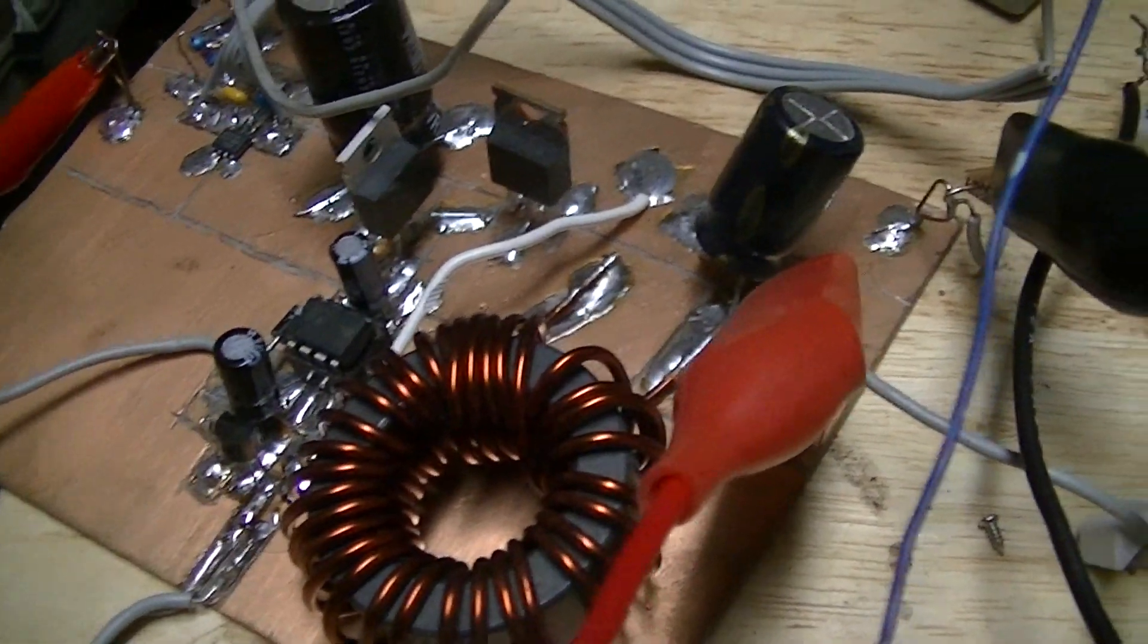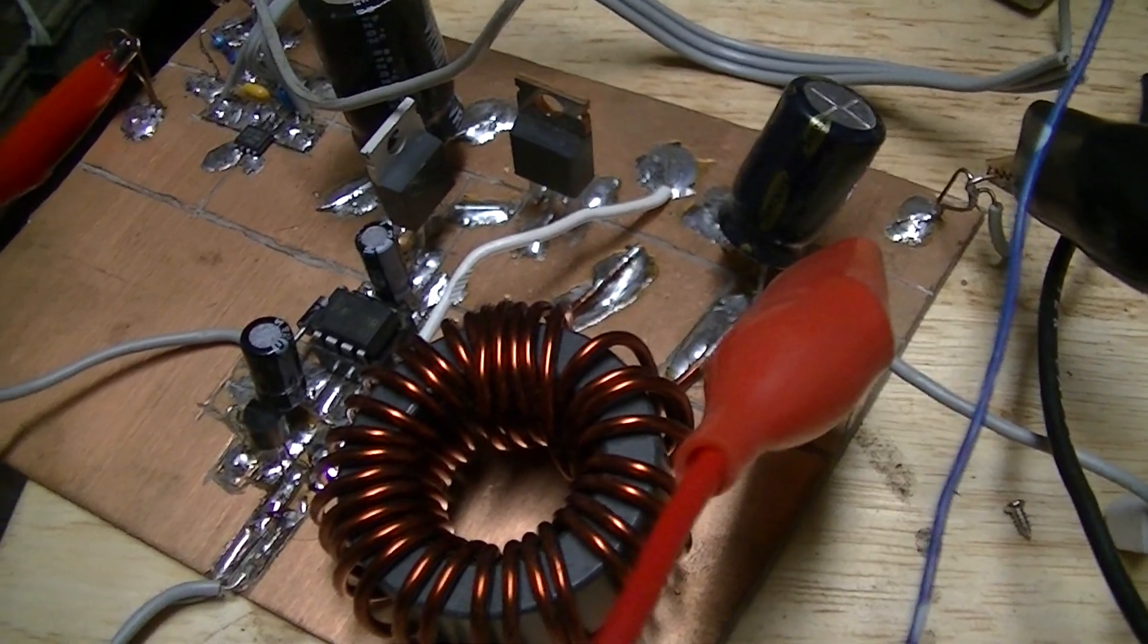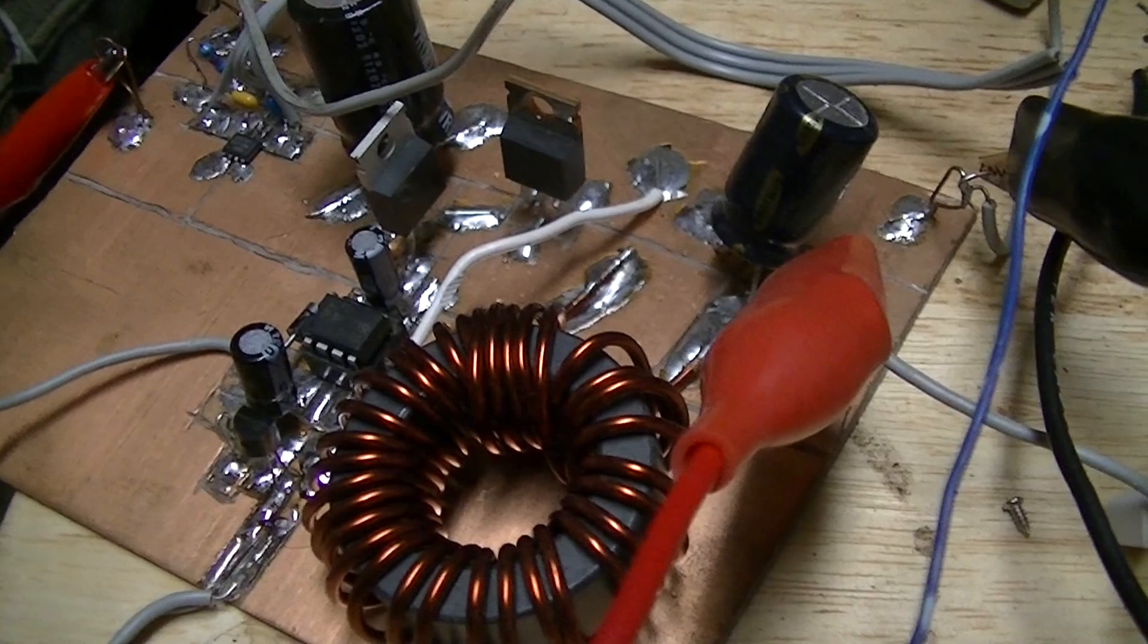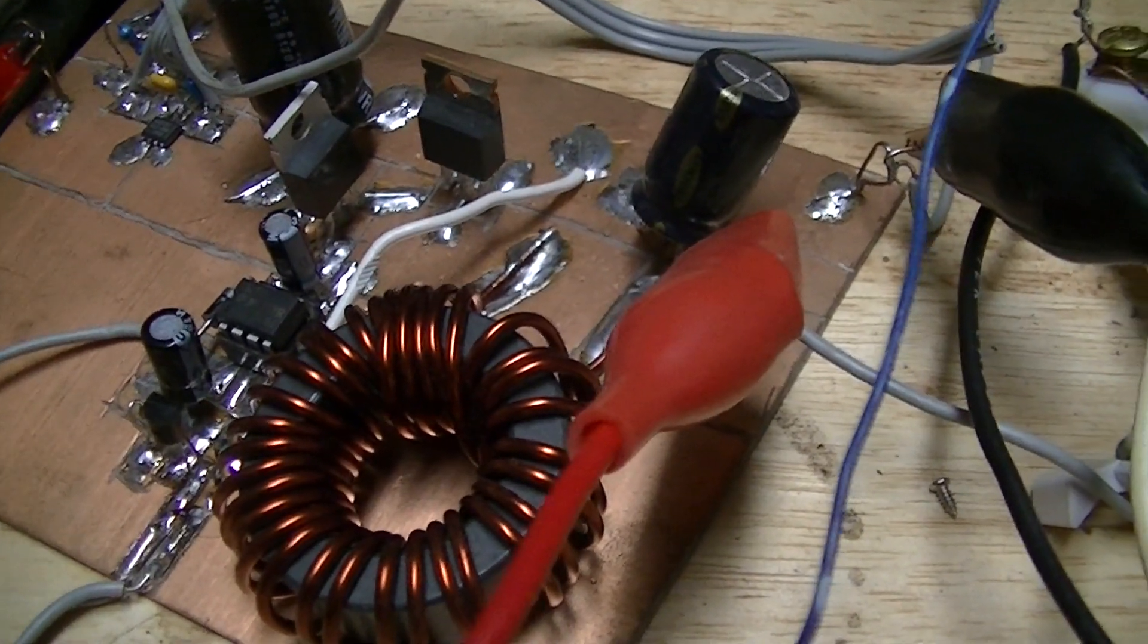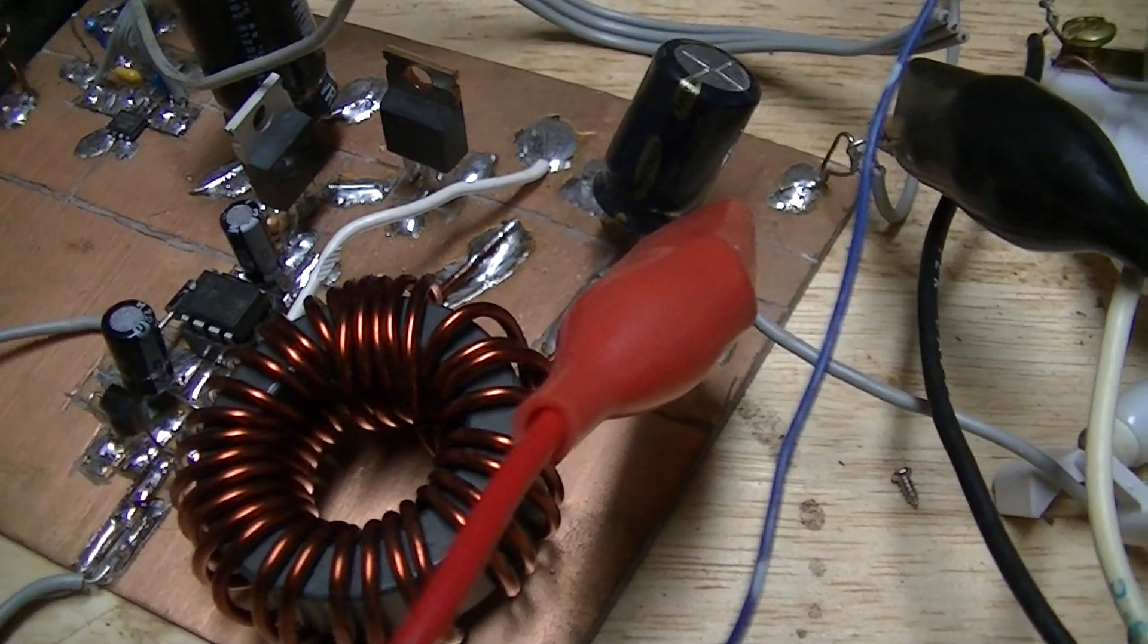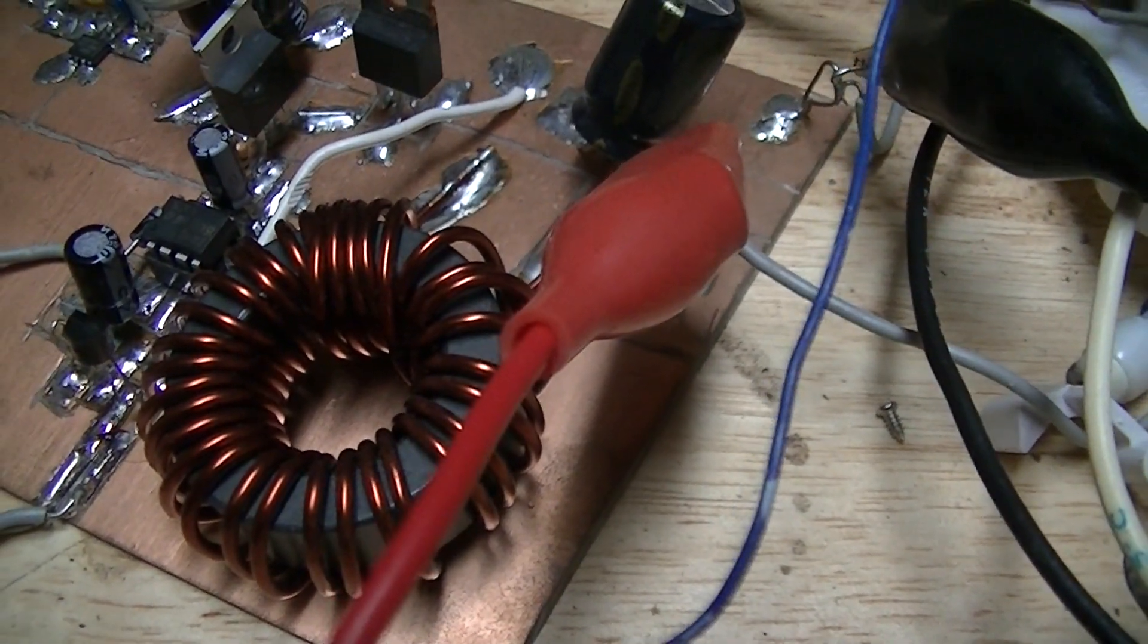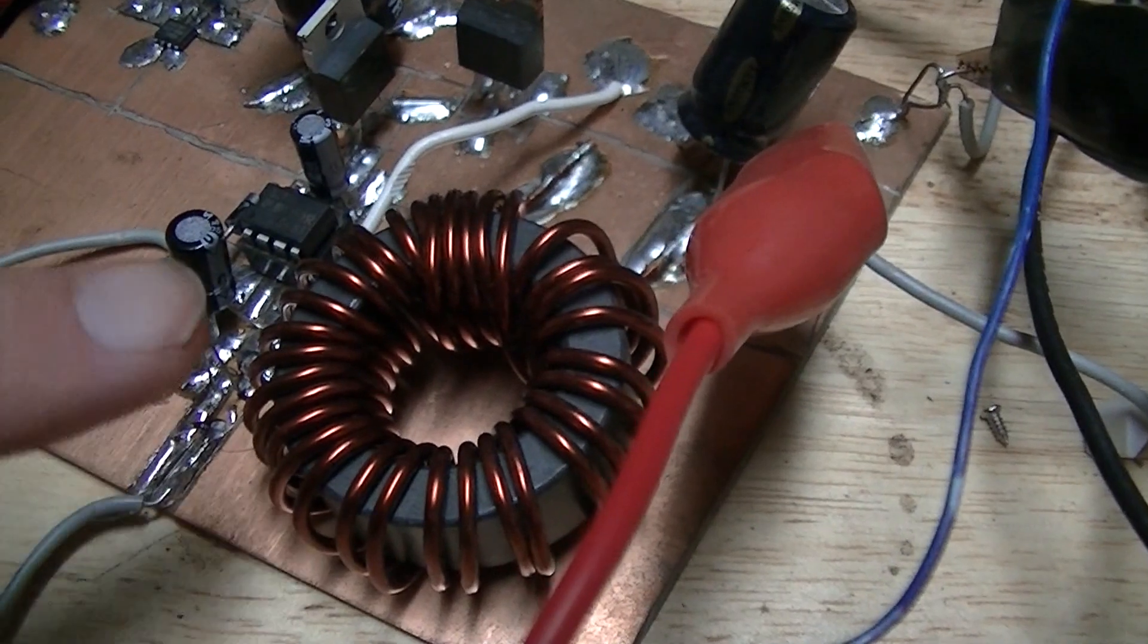One problem that I was having with this is that something had, probably because the gate was just exposed on a flying lead, ESD ganged the gate. And as a result the FET stopped working properly, so I just had to replace it and put in a new transistor, and it works now.